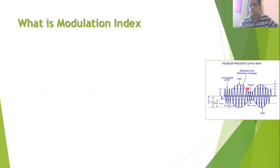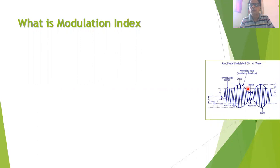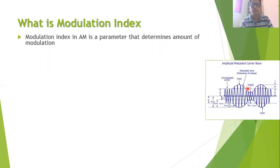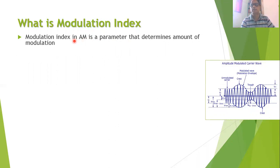You will find that in the amplitude modulated voltage some crests and troughs are produced as shown in this diagram. Whenever we do certain modulation it is mandatory for us to determine what is the percentage of modulation, and this percentage of modulation can be determined by using a parameter called the modulation index.